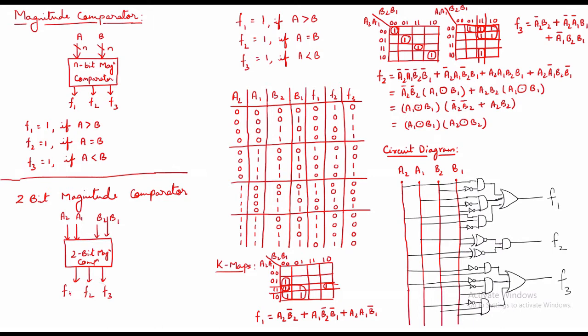F1 is A greater than B, F2 is A equals B, F3 is A less than B. Now I am designing the truth table with columns A2, A1, B2, B1, F1, F2, and F3. For A2A1 = 0,0, I take all 4 possible values of B2B1 — that is 00, 01, 10, 11 — because 2 to the power 2 gives 4 combinations. Then for each combination of A, I compare with all 4 combinations of B and find the values of F1, F2, and F3.